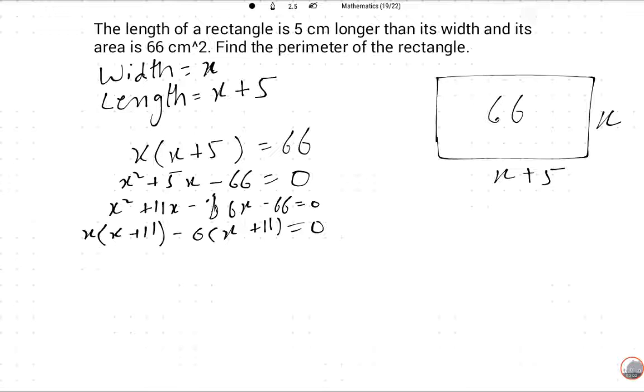So x + 11 = 0 or x - 6 = 0. One value is -11, which is impossible. The second value is 6, which is possible.